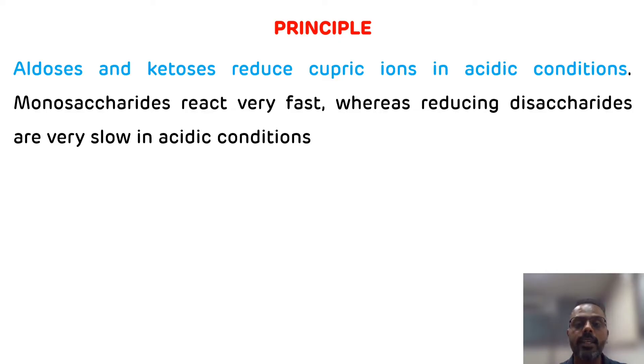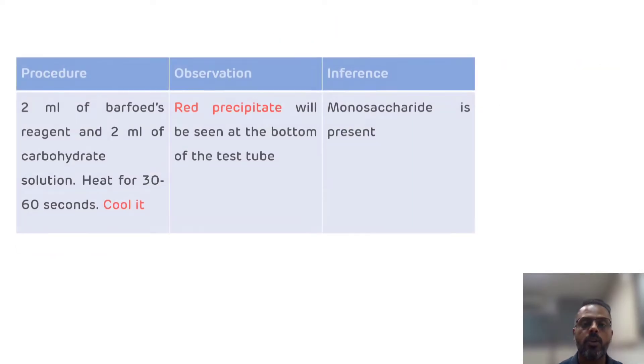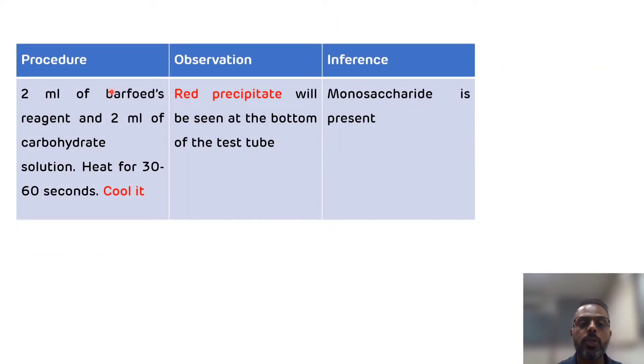Now we will see the procedure, observation, and inference of Barford's test. In the test tube, take 2 ml of Barford's reagent, which consists of cupric acetate and glacial acetic acid. In the same test tube, add 2 ml of carbohydrate or given solution, then mix it properly.